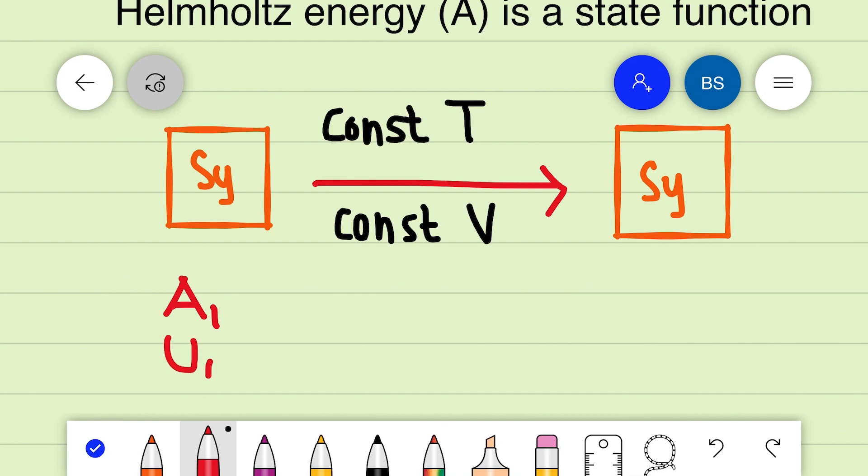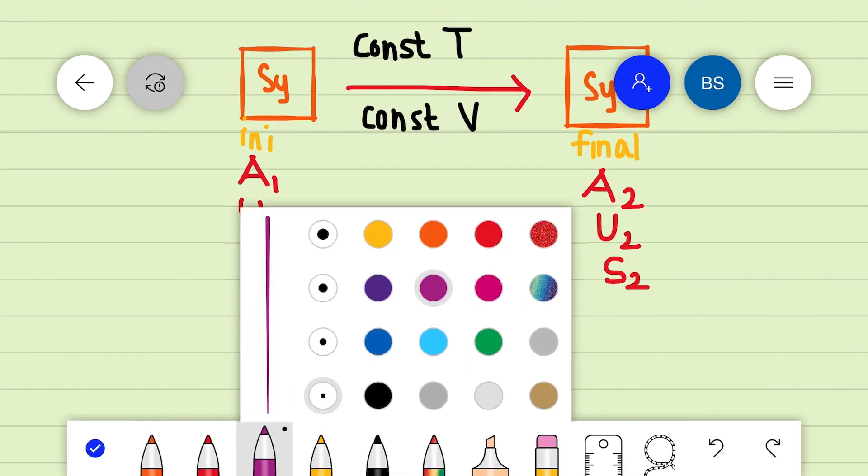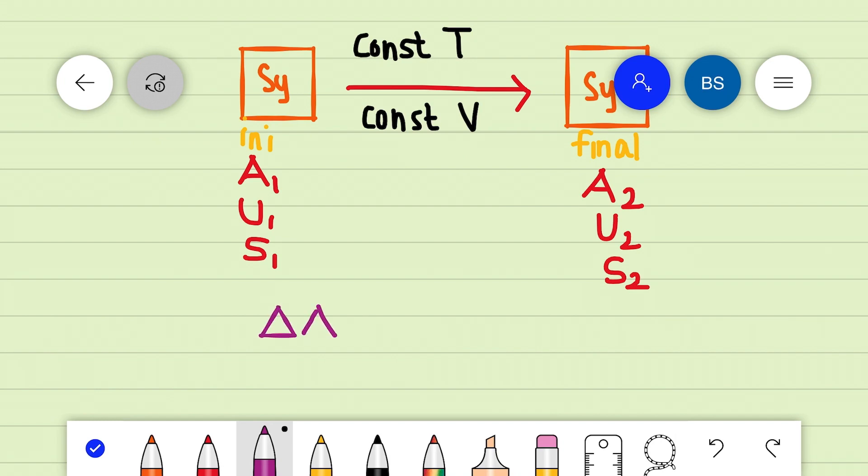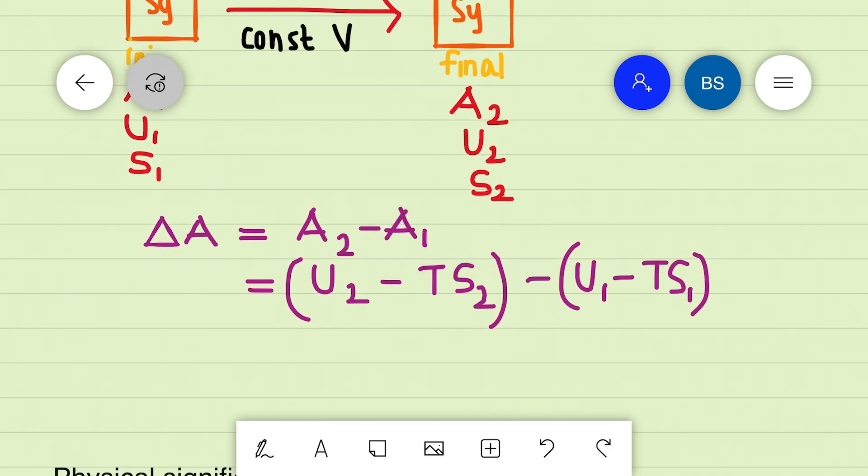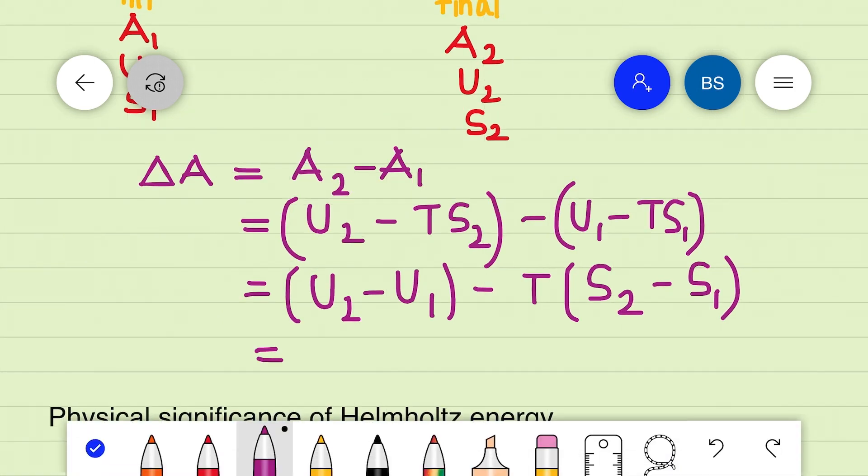If A1, U1, and S1 represent respectively the Helmholtz free energy, internal energy, and entropy of the system in its initial state, and if A2, U2, S2 represent the corresponding values in its final state, then the Helmholtz free energy change is given by A2 minus A1, which equals (U2 minus TS2) minus (U1 minus TS1). On rearranging we get (U2 minus U1) minus T times (S2 minus S1), that is delta U minus T delta S, which equals delta A.